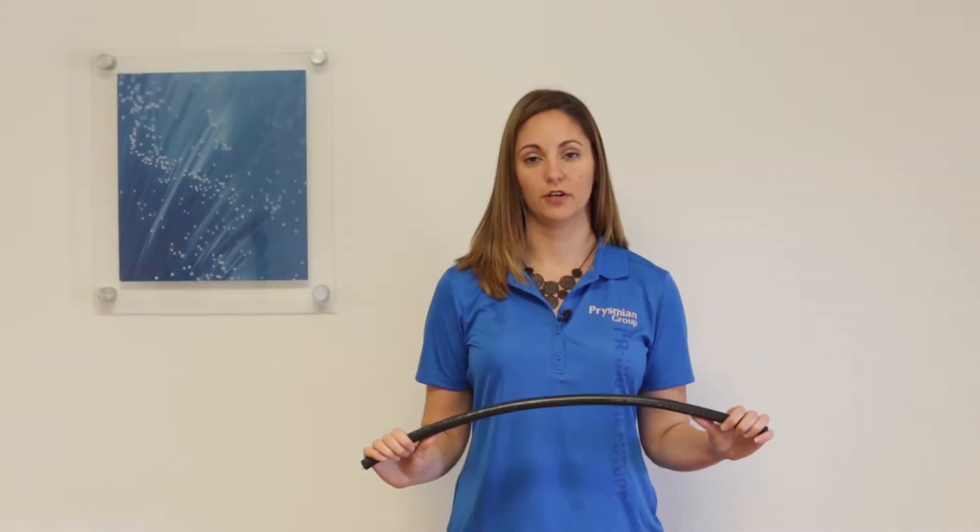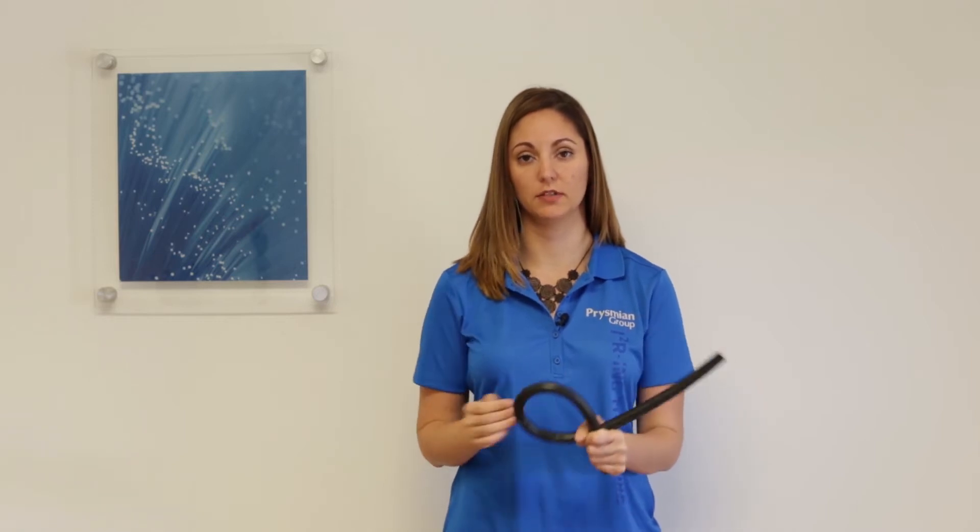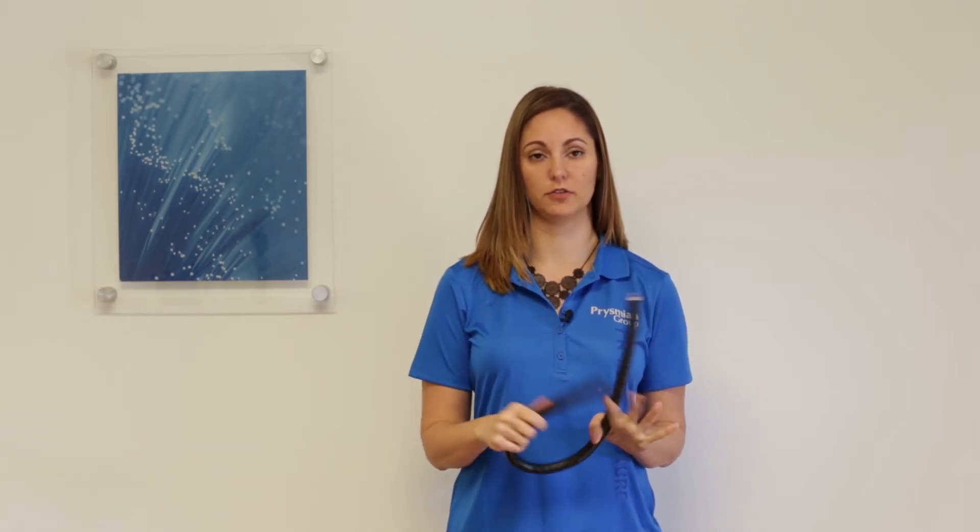Low voltage AirGuard is Prismian cable solution to metallic armored cables. AirGuard is a polymeric armored cable which offers increased flexibility.